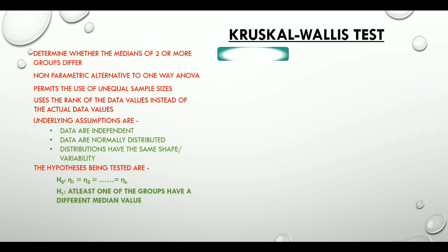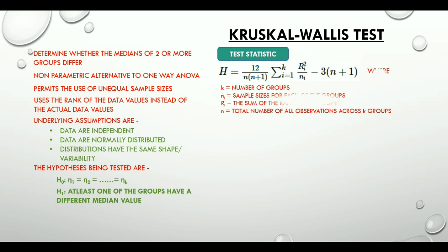The test statistic for the Kruskal-Wallis test is denoted by H and is calculated using this formula, where k is the number of groups and ni is the sample size for each group, ri is the sum of the ranks for group i, and n is the total number of all observations across k groups.